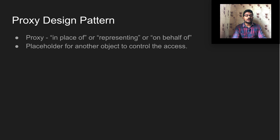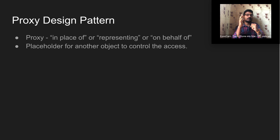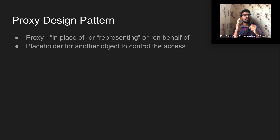A proxy is a placeholder for another object to control access. For example, there are two objects: a real object and a proxy object. The proxy object controls the access to the real object. If a client is trying to access the real object, this proxy object comes into action and checks whether the client has permission based on various criteria.